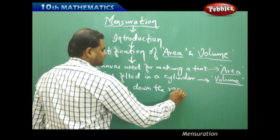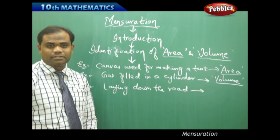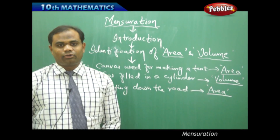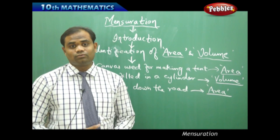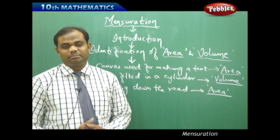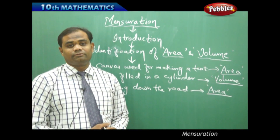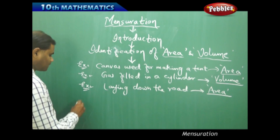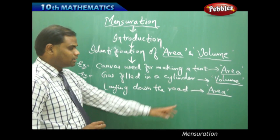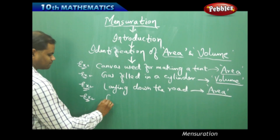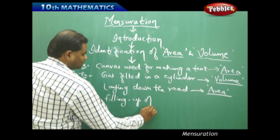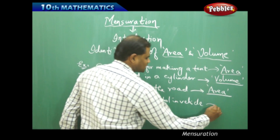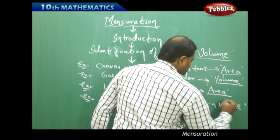Laying down a road or construction of a road is clearly a problem related to the surface, that is area. Filling up petrol in the tank is a problem related to volume, because when I fill petrol in the tank I measure it in liters — I say I want 5 liters of petrol filled, not a certain area of petrol. Therefore, laying down the road is area-related, and filling up petrol in a vehicle tank is purely volume-related.